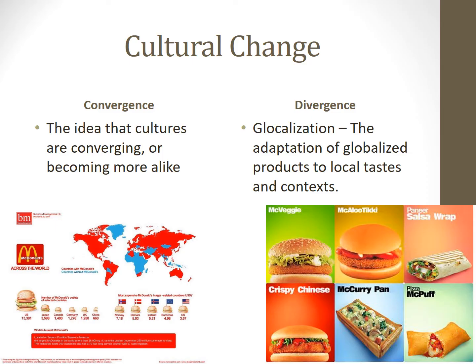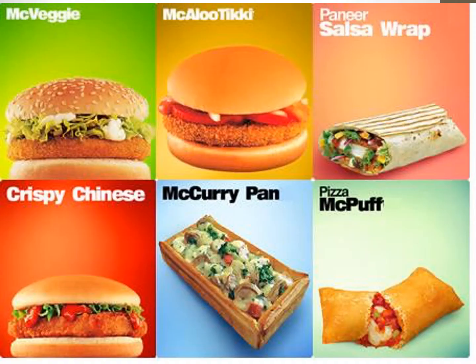But globalization is not an all-powerful force. Communities respond in different ways, reject outright some of what globalization brings, while transforming and absorbing other aspects into local culture. That is known as cultural divergence — the concept that cultures remain distinct despite increased contact. One prominent example of this is the modification of the McDonald's menu. While it is increasingly likely to see the golden arches in an urban area throughout the world, the menu items can vary based on local cultural practices and preferences.